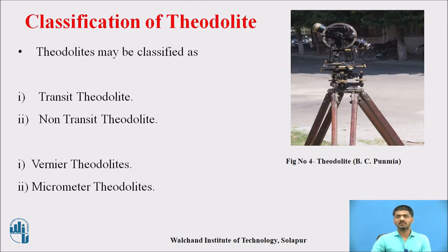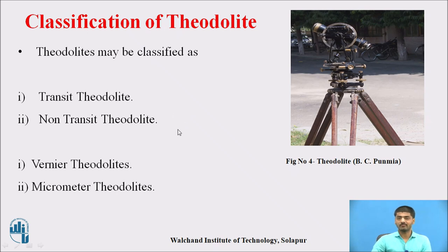Classification of theodolite: theodolites may be classified into two parts. First, transit theodolite and non-transit theodolite. Second, vernier theodolite and micrometer theodolite.